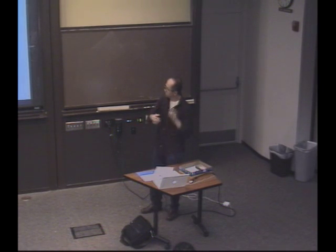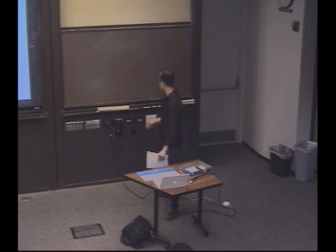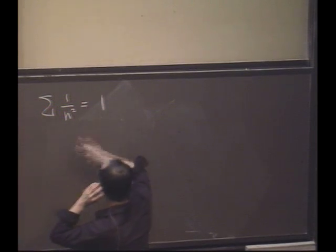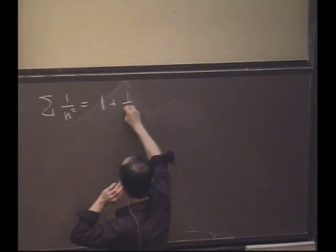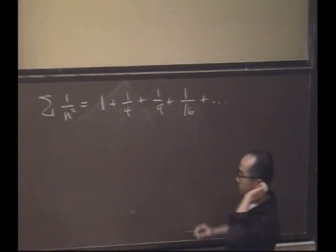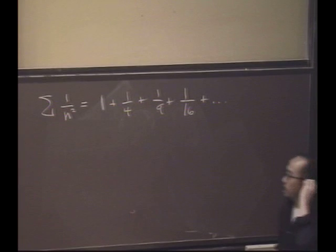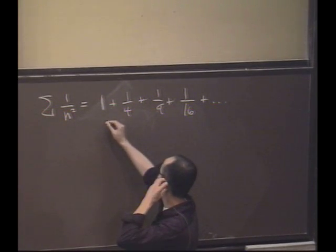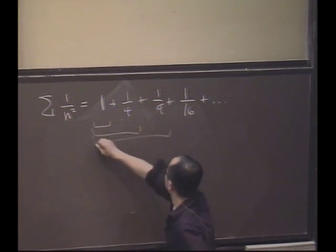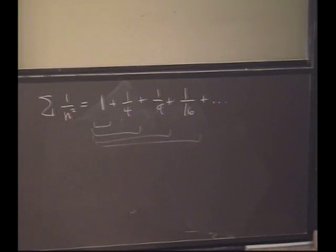What I want to do today is build on what we talked about last time. Last time we said, how do we tell if a series converges? What if you have a series like one over n squared? That's a series — it's a sum of a bunch of terms. What we mean by a series is look at the sequence of partial sums, and ask: does it converge?